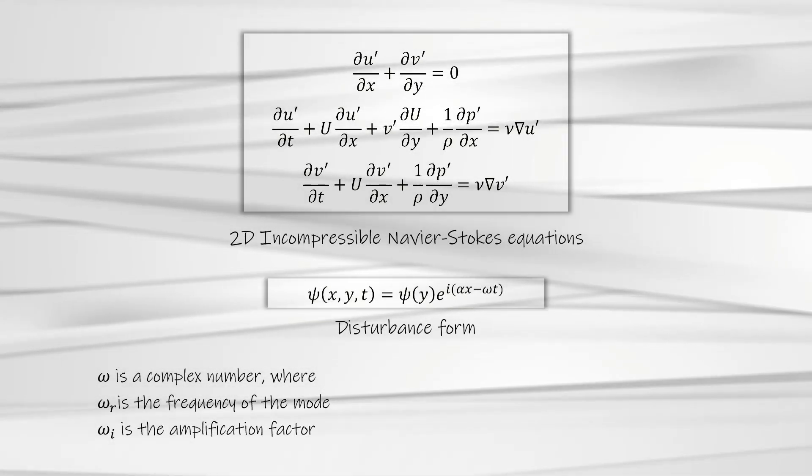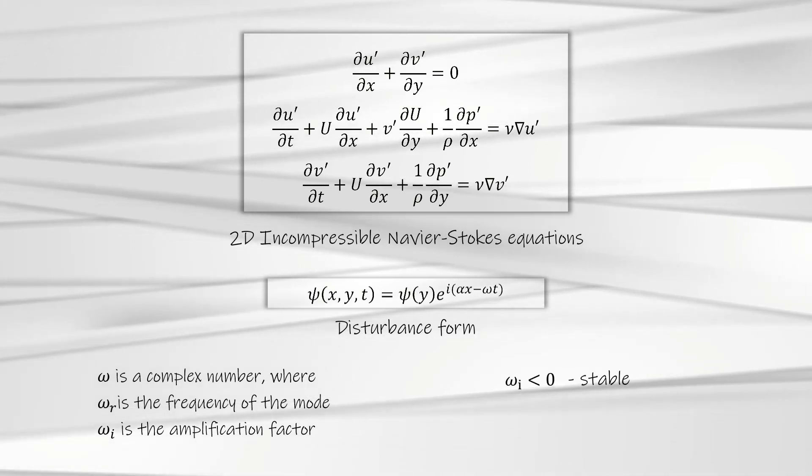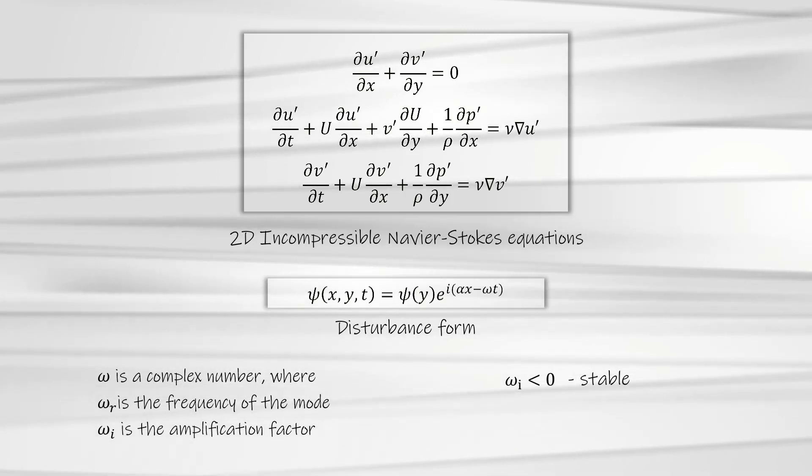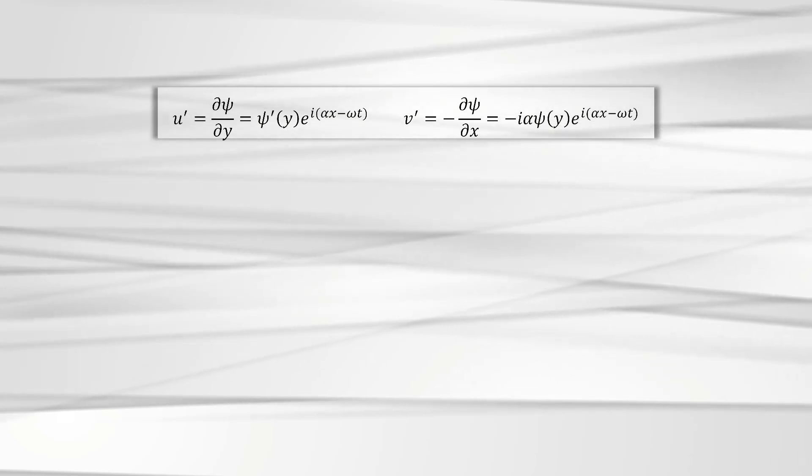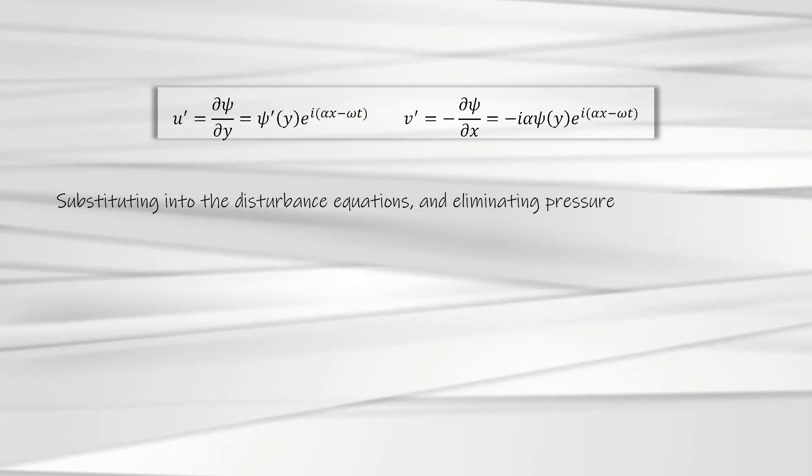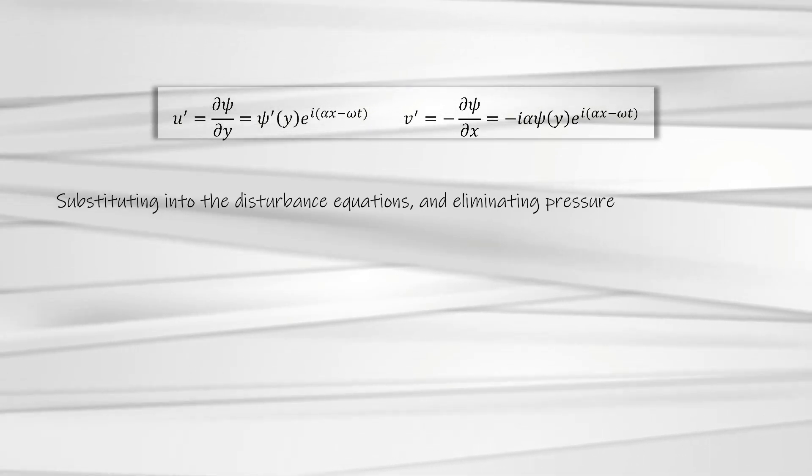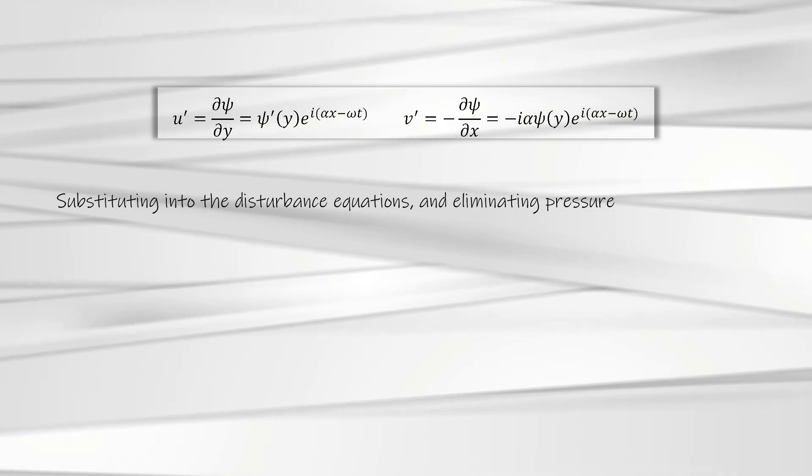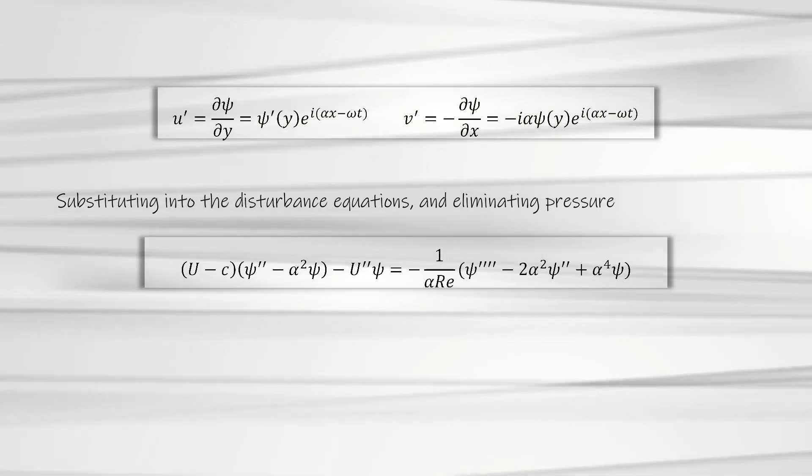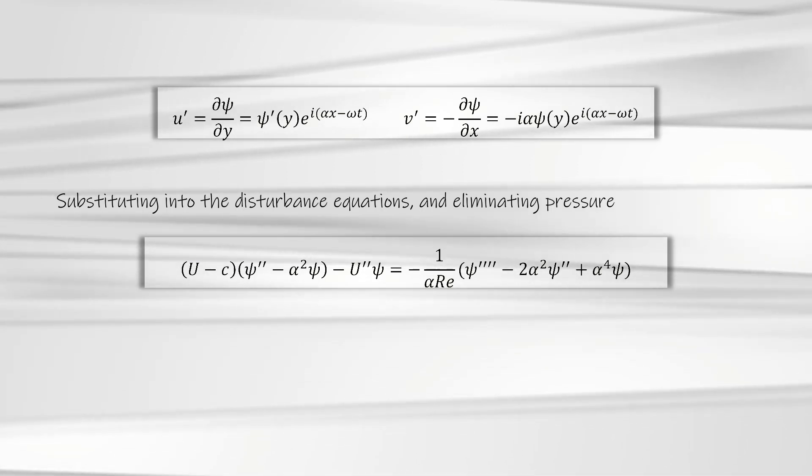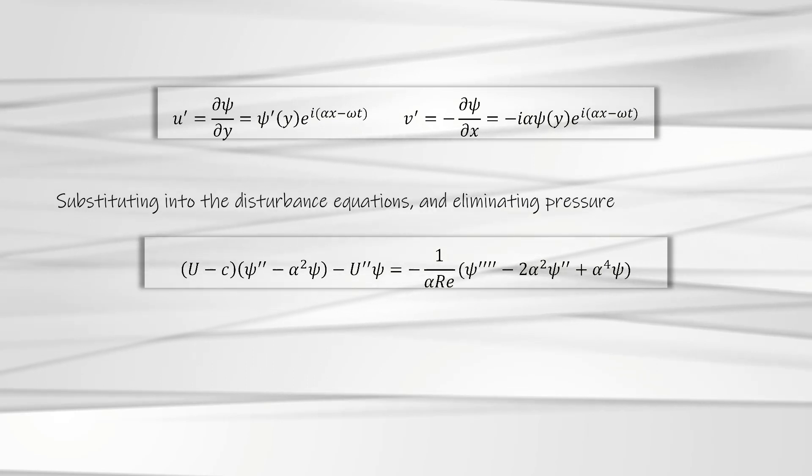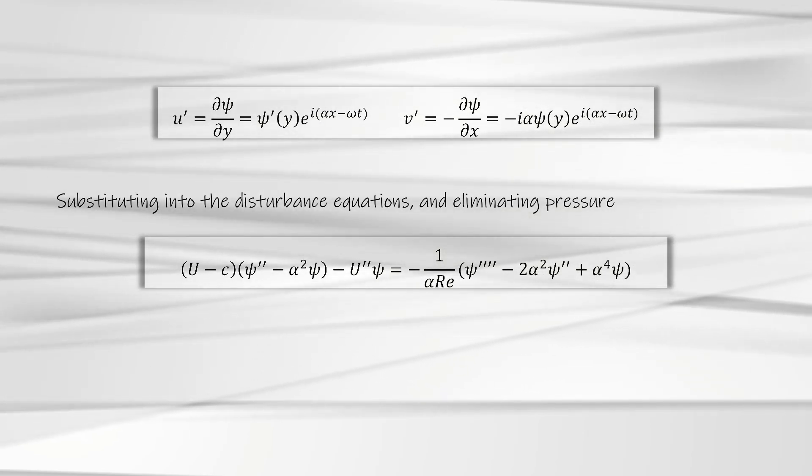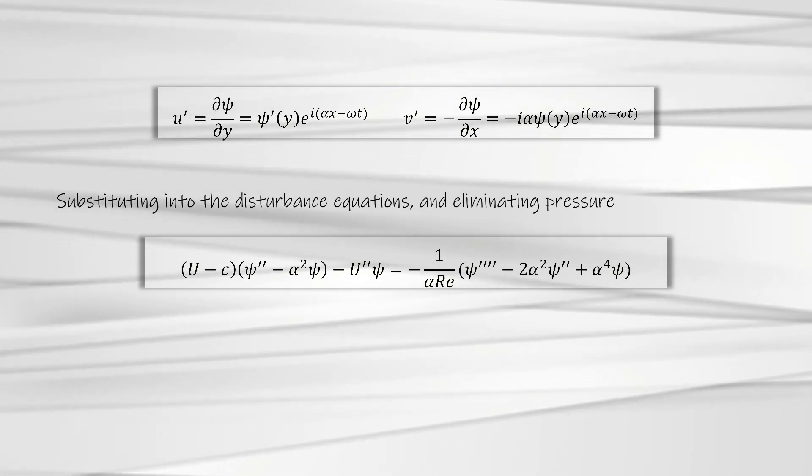If the imaginary part of omega is 0, the wave is damped and therefore the flow is stable. However, if this value is greater than 0, instabilities are present in the system that eventually get amplified. From the stream function, we can obtain the velocity components as shown here. If we substitute these velocity components into the disturbance equations and rearrange them such that the pressure term is eliminated, we obtain a fourth order differential equation for the amplitude function. This approach was independently developed by William Orr and Arnold Sommerfeld and this fourth order equation which describes the hydrodynamic stability characteristic of viscous parallel flows is referred to as the Orr-Sommerfeld equation.